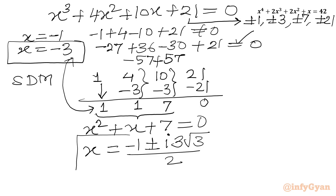So the two real base solutions are x = 2 and x = −3, and the two complex solutions are x = (−1 ± i·3√3) / 2. I hope friends you will like this video. Thank you so very much for watching. Do not forget to like, share, subscribe and support our channel. Bye-bye, good luck, take care.